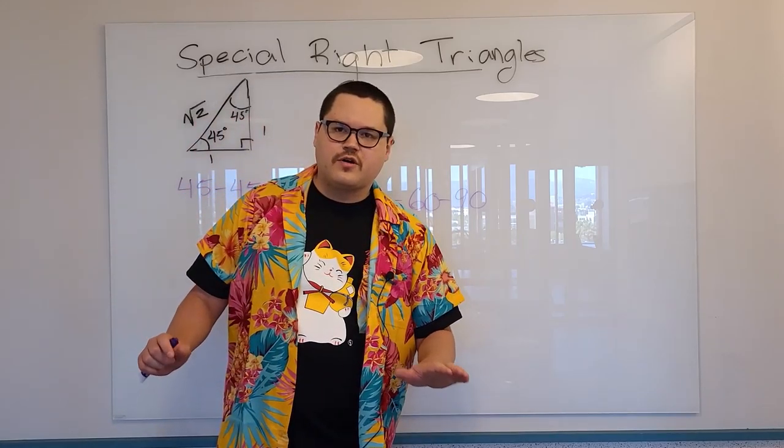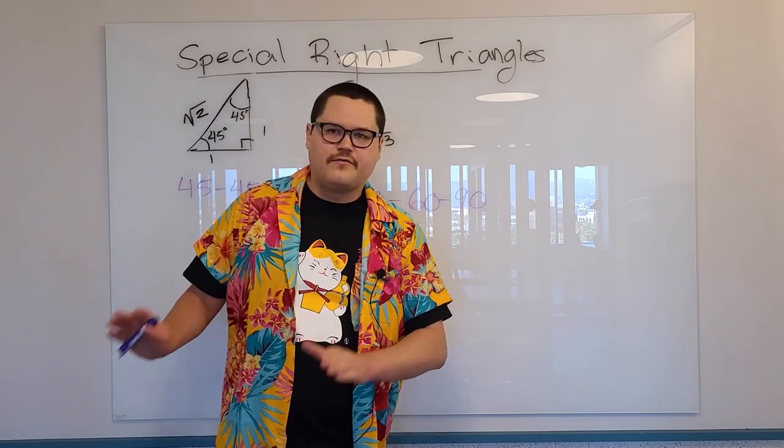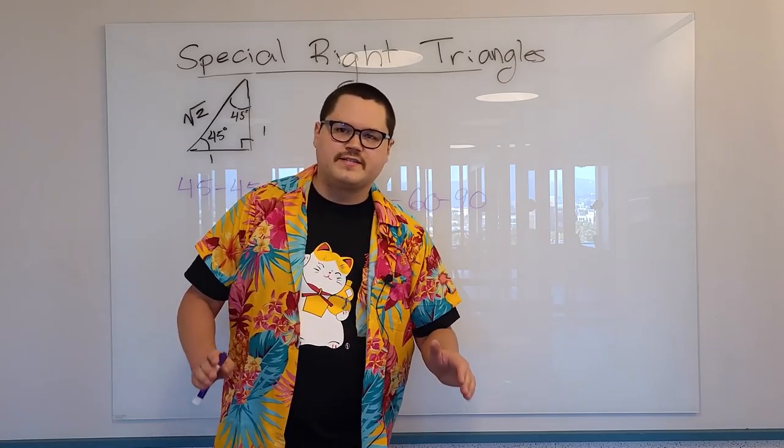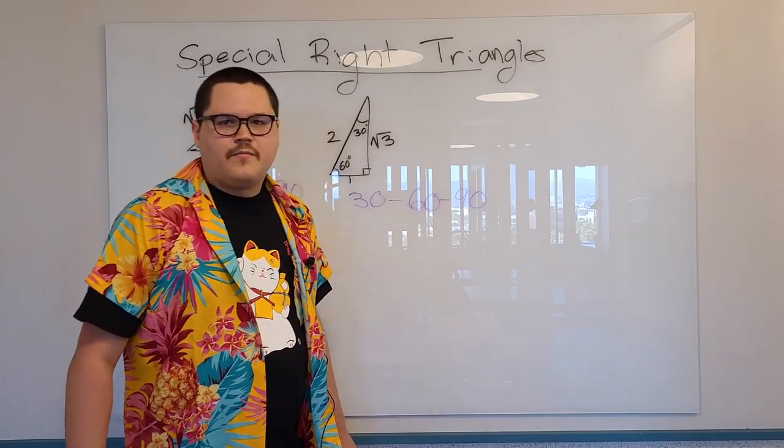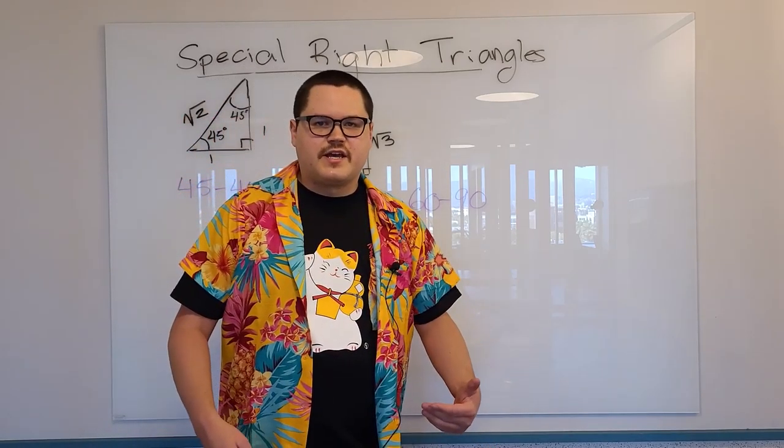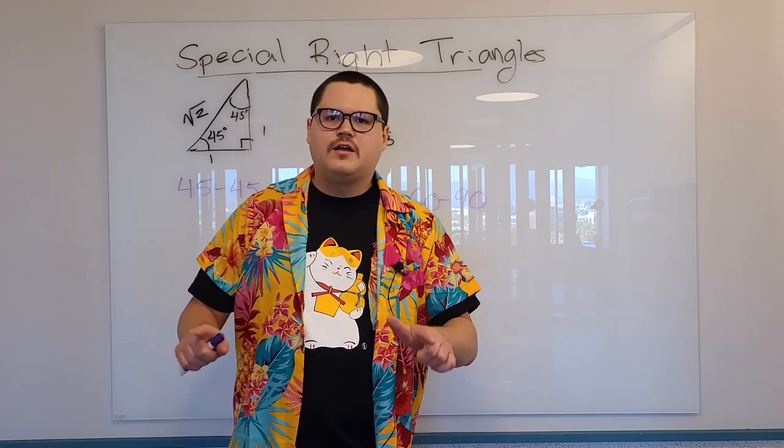Now if you have any other triangle, any other special right triangle, meaning 45-45-90 or 30-60-90, it might not have these exact side lengths, but its lengths will be in the same ratio. Are you confused? Let me show you.